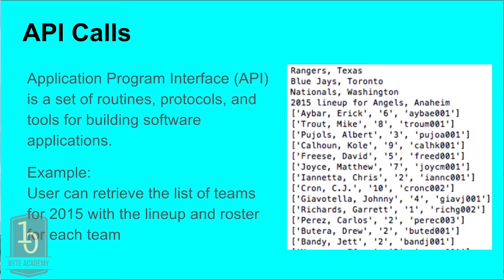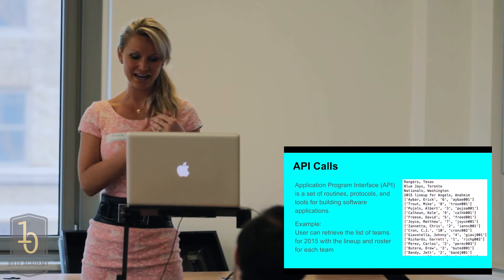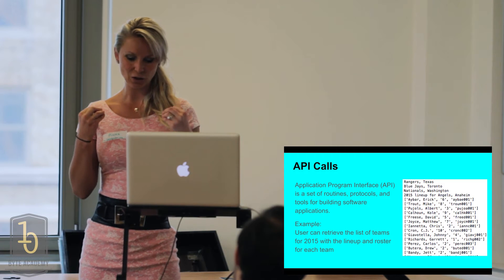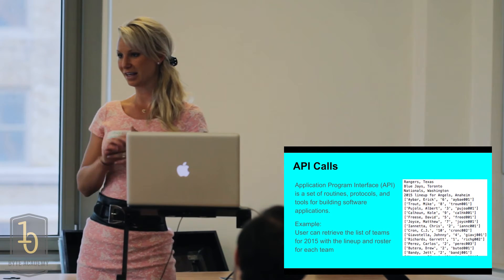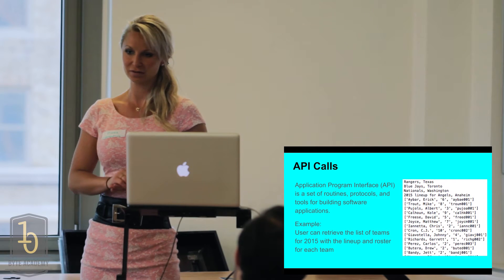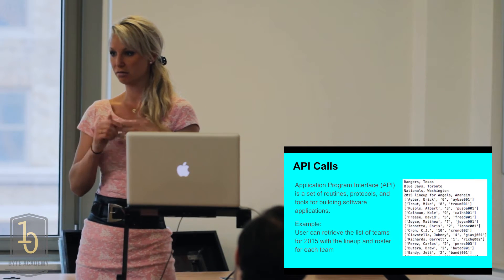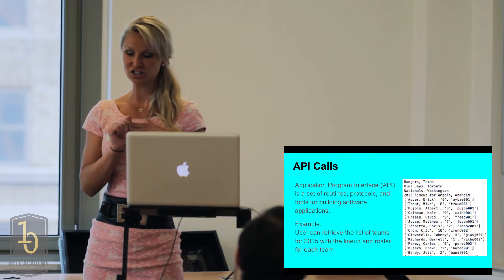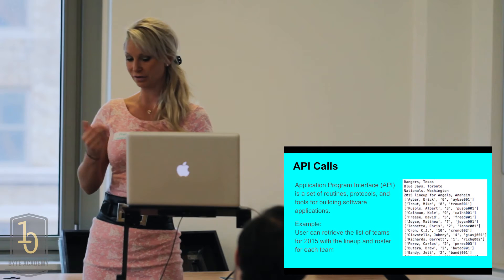And this is what it looks like. As an example, a user can retrieve a list of teams for 2015, like lineups and rosters. I know it's not very exciting, but this is how the computer reads things. It has to have a name and a code, it has to be very specific, and it has to have its own unique ID — because as everybody knows, players can get traded. One day a player's playing for the Mets, the next he could be traded to the Cubs. So every player has a specific ID unique to them, and that's how the computer pulls the information.